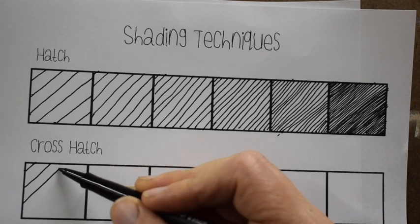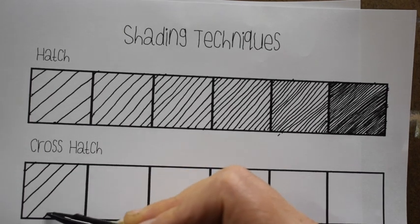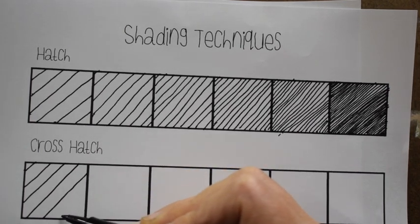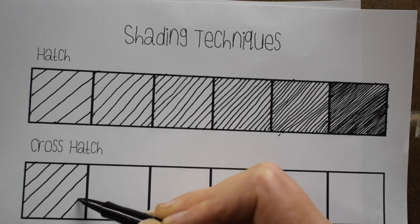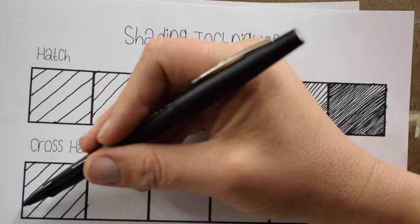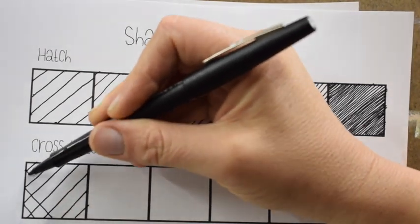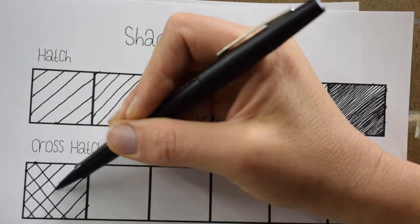Alright, so now we're moving on to the crosshatch. Crosshatch is actually my favorite of all of these. And it is what it says. It's a hatch but it's cross like crisscross there.